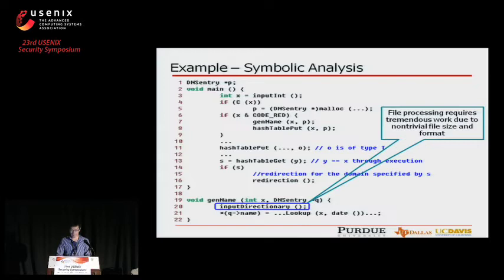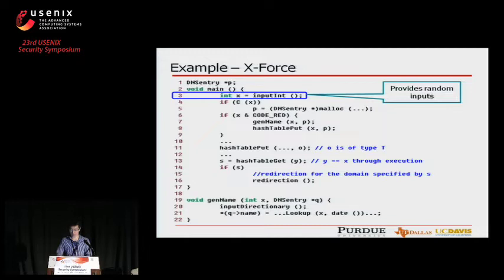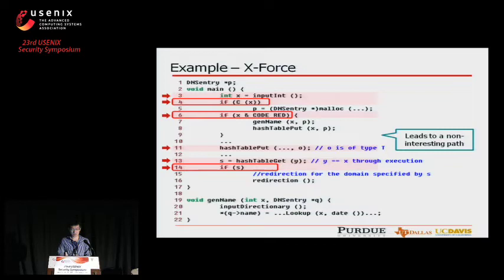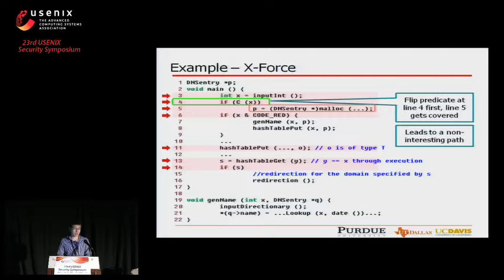Now we see how X-Force addresses these problems. X-Force provides random inputs for the program to execute, so X would be a random value. There are three predicates at lines 4, 6, and 14. With random input, we assume all three predicates go to the false branch, leading to a non-interesting path with no object pushed to the hash table and the malicious payload not triggered. X-Force then tries to flip predicates one by one. It first flips the predicate at line 4, triggering line 5, but this still leads to a non-interesting path since line 8 is not covered and the malicious payload is not triggered. Next, X-Force tries to flip the second predicate at line 6, calling function gen_name and hash_table_put.